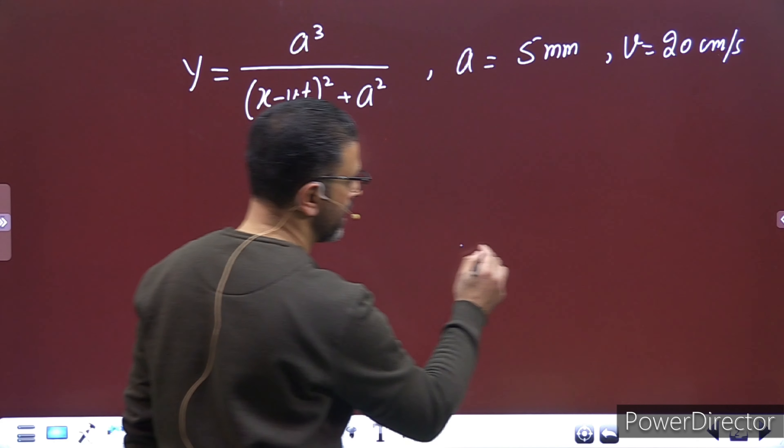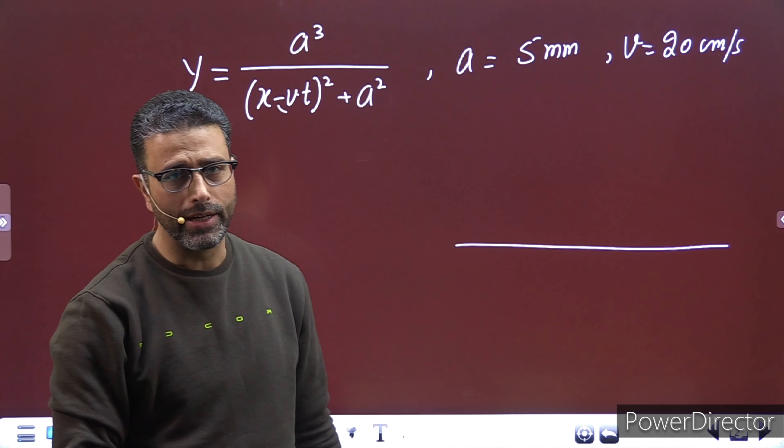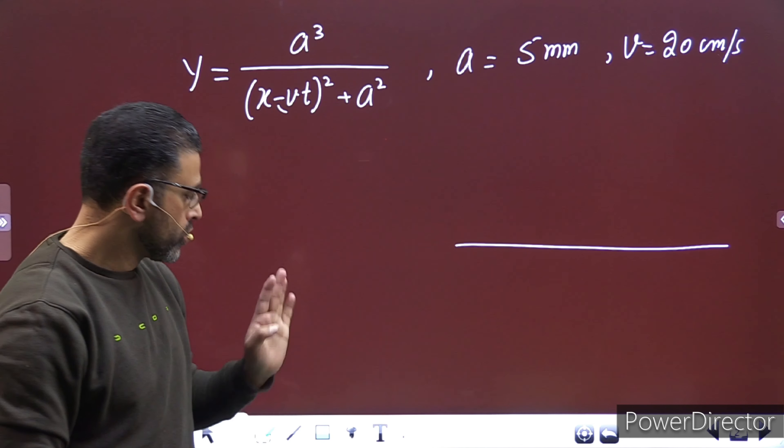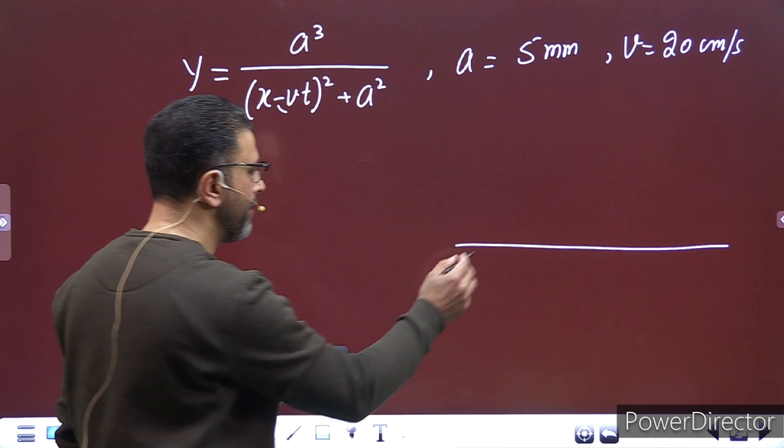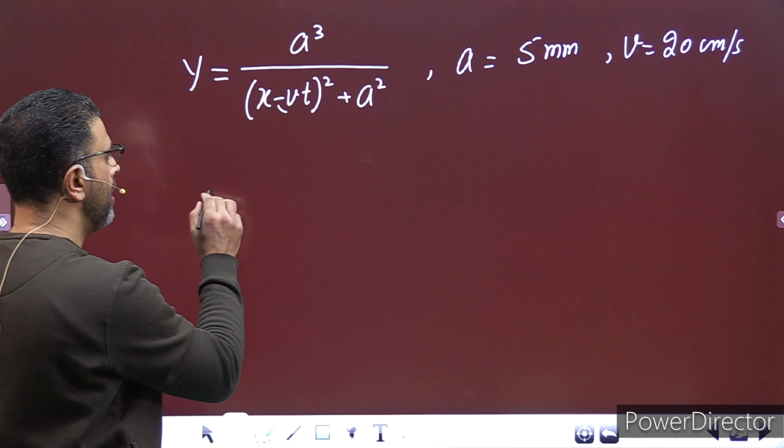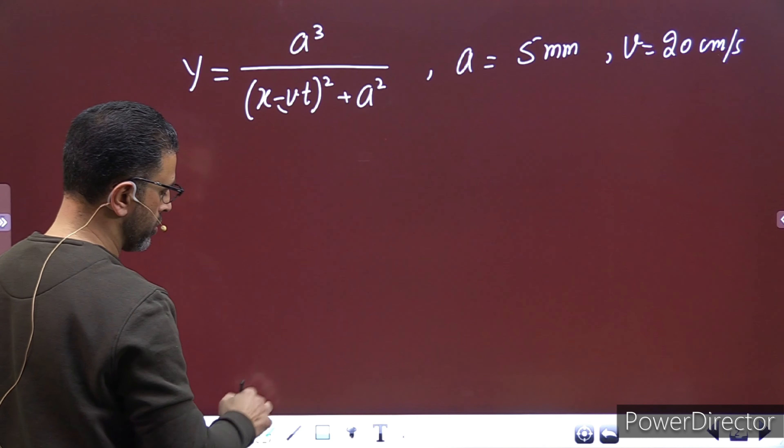So, we have some string, there is a wave pulse in it, we have to draw its shape, how it will look according to this equation. This is the equation of the pulse. What we'll do is, for drawing the graph, first we'll look at a few things here, and then using that information we'll draw the graph. First I'll write this equation, rewriting this equation at t equal to 0.